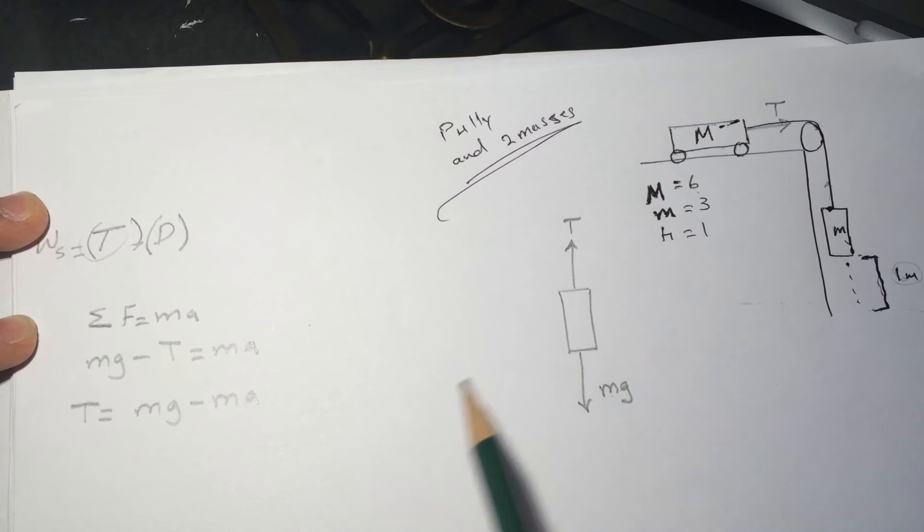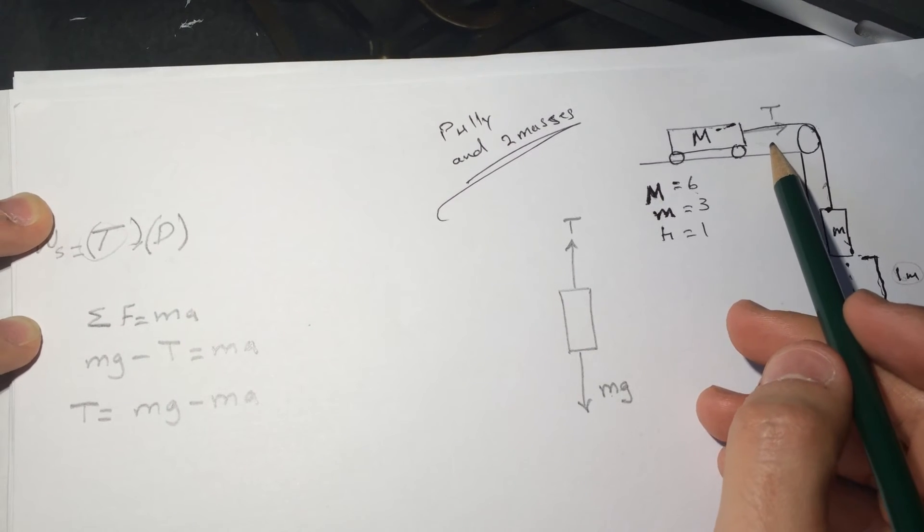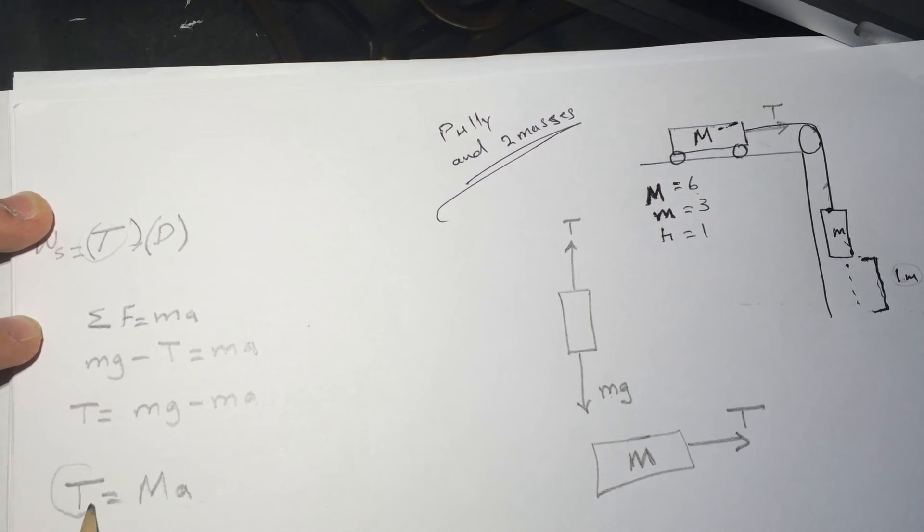Going back, let's draw the free body diagram for this one. So the M here, big M, only has the tension. So let's put tension equal big M times a, and both of them have the same acceleration.